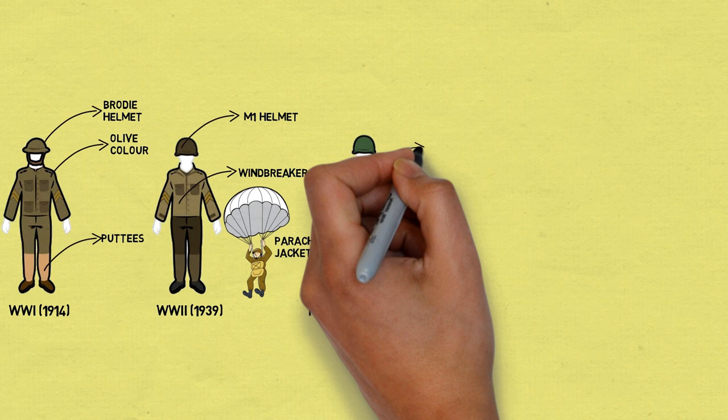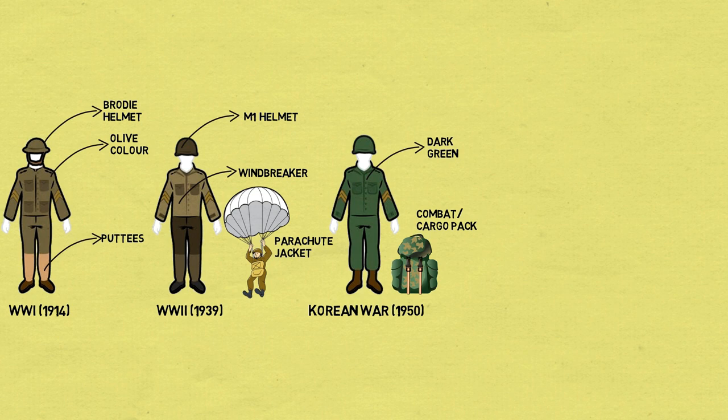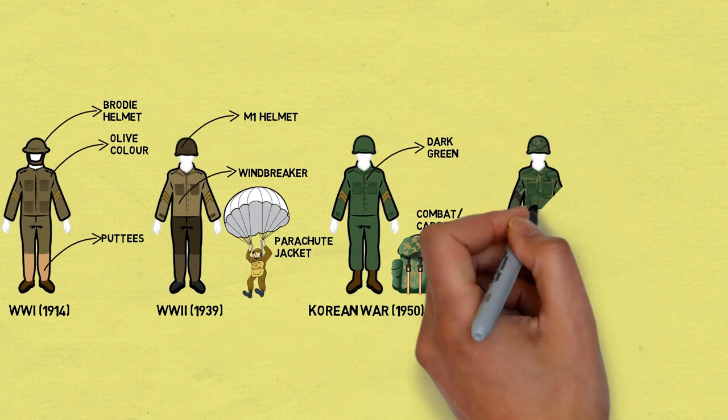Korean War 1950: During the Korean War, the US Army uniforms had a green olive color. The Korean War also saw the introduction of combat and cargo packs for soldiers.